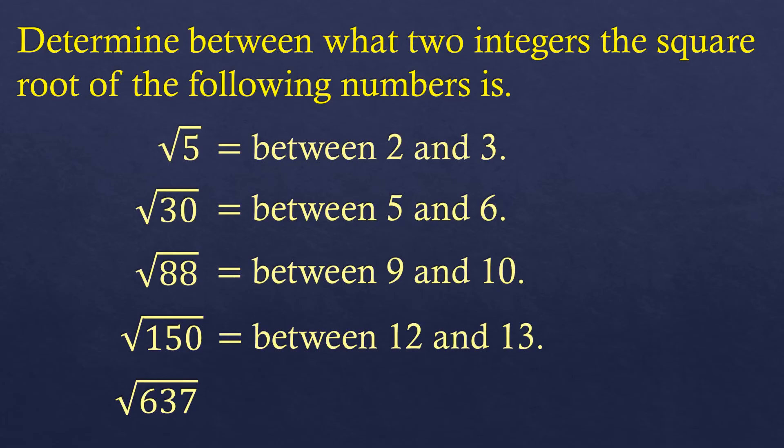Next is square root of 637. You have to do a lot of trial and error for this if you are not familiar with the squares of the integers. The closest to this is actually 625. 625 is a perfect square closest to 637. Square root of 625 is 25. 25 times 25 is 625, so the square root of 637 lies between 25 and 26.